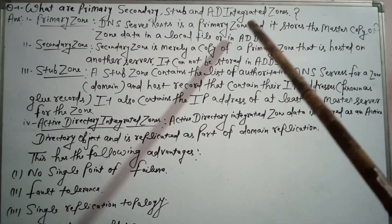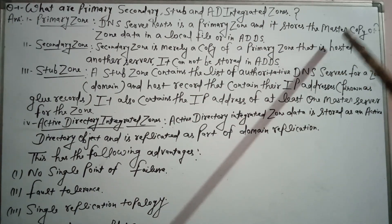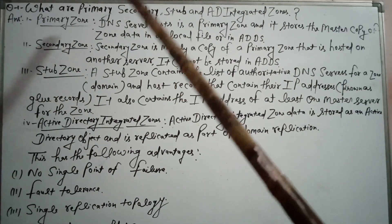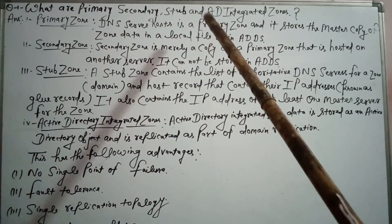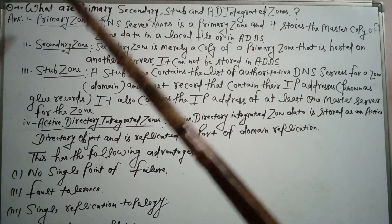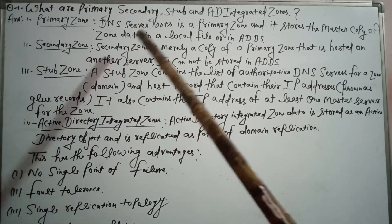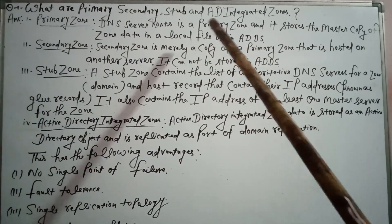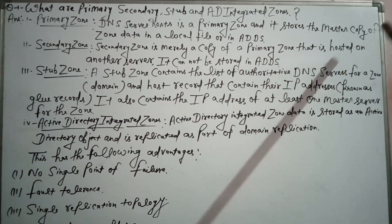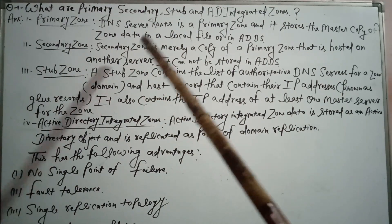Number one: Primary zone. A DNS server hosts a primary zone, and it stores the master copy of zone data in a local file or in Active Directory. Number two: Secondary zone. A secondary zone is merely a copy of a primary zone that is hosted on another server.